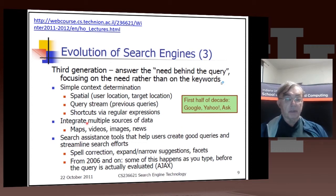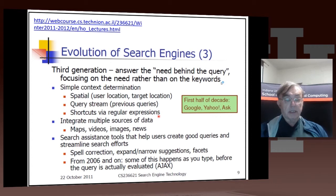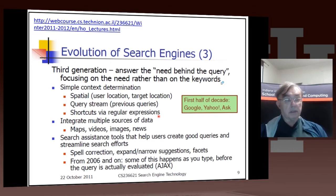And of course it's not just text — we have maps, figures, images, news stories, and things like that. As you type your query, there's automatic spell correction and automatic real-time results so you can see whether what you're getting is what you really wanted, which helps you write a better query. These are all ways of helping the user, as they write the query, to get good answers.